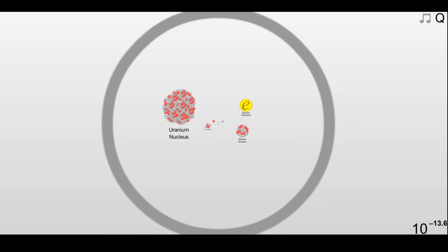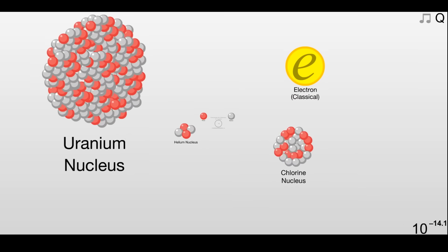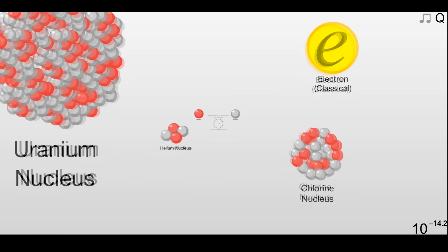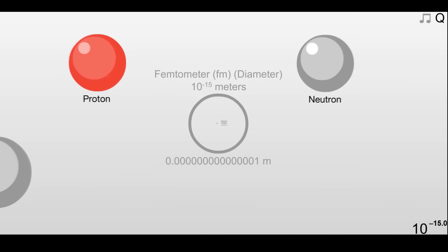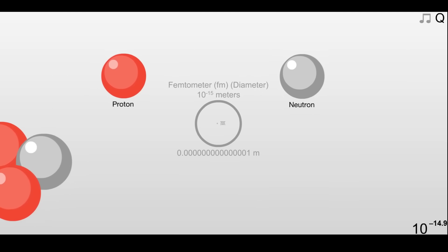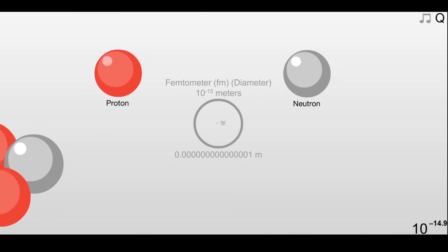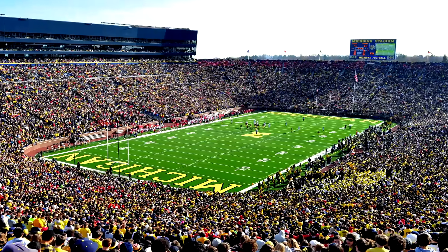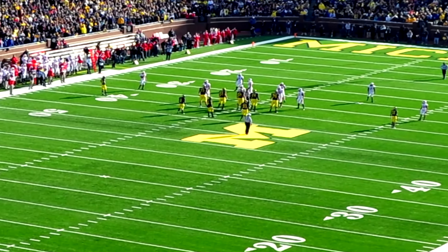Now let's go a thousand times smaller than this. This is one times ten to the negative fifteen, or one quadrillionth of a meter. This is the size of particles that make up the nucleus of atoms, protons and neutrons. The size of a typical atom however is a hundred thousand times larger than its nucleus. So if an atom was the size of Michigan football stadium, the biggest stadium in the United States, the nucleus would be a marble sitting in the middle of the 50-yard line.